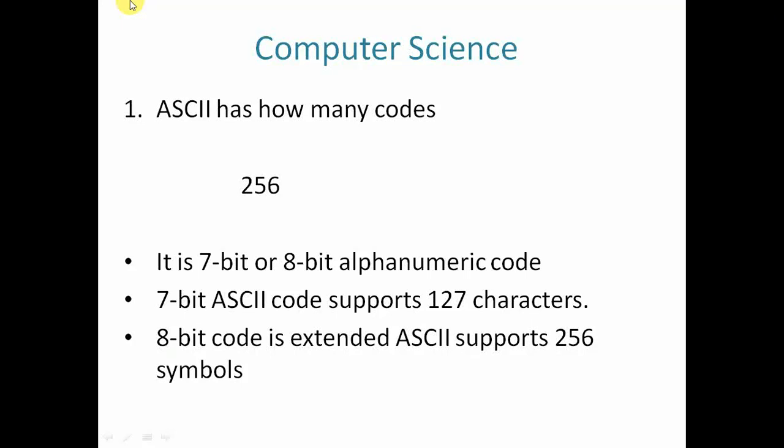Hi friends, first question: ASCII has how many codes? The answer is 256. Actually there are two ASCII codes. One is 7-bit and another one is 8-bit. The 7-bit ASCII code supports only 127 characters and 8-bit ASCII code supports 256 characters. The full form of ASCII is American Standard Code for Information Interchange.